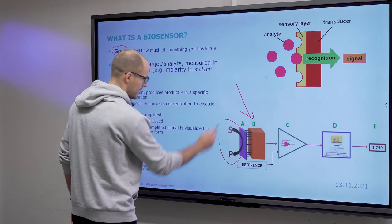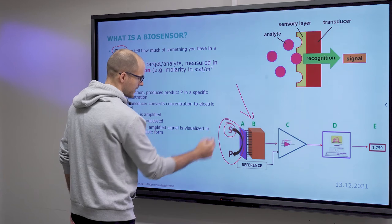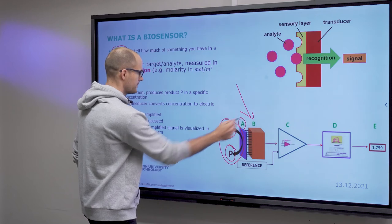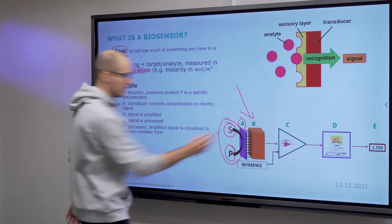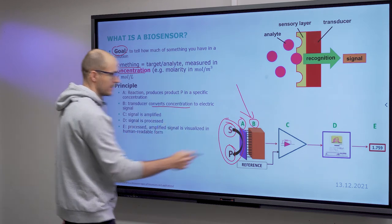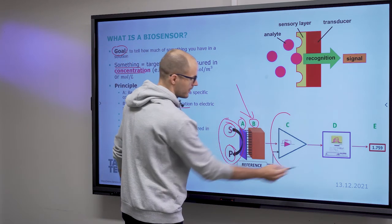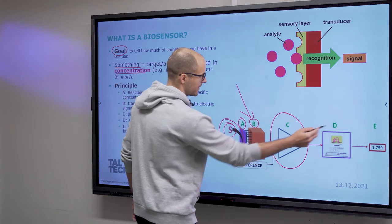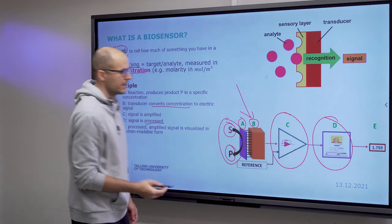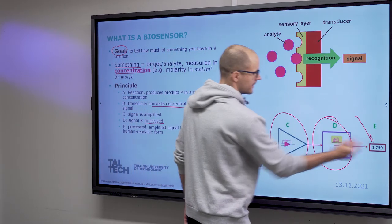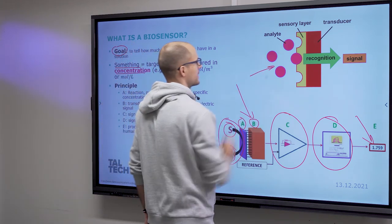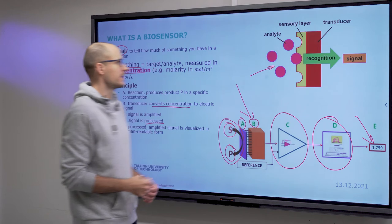So you have here a reaction converting substrate or substance to product, and you have an interface which connects to your transducer that converts this concentration to an electric signal. And then you amplify and filter that signal, and then you can process the signal, and then at the end you have a human-readable representation.